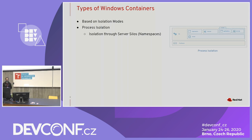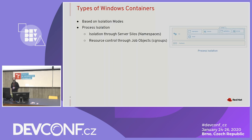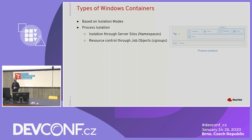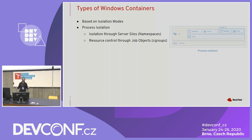To handle resource control, they used a construct called job objects — a job object can be used to control a set of Windows processes. They decided to use that job object concept for their containers.